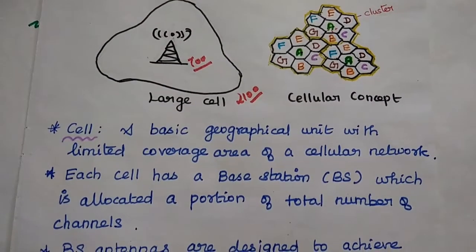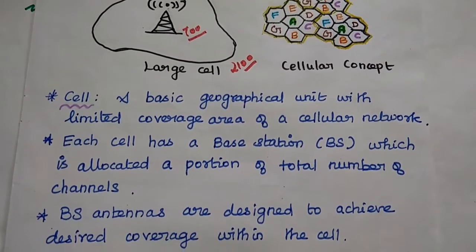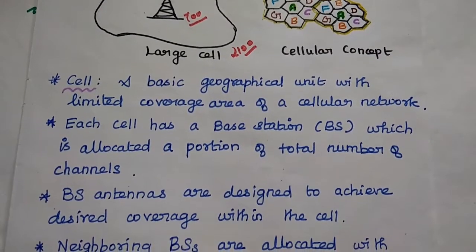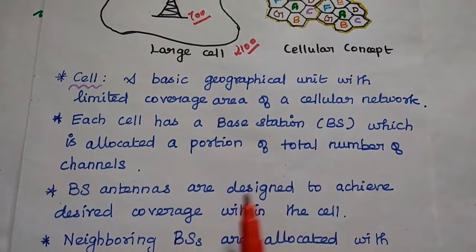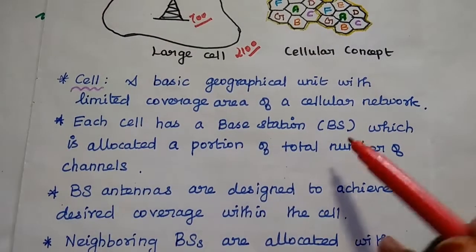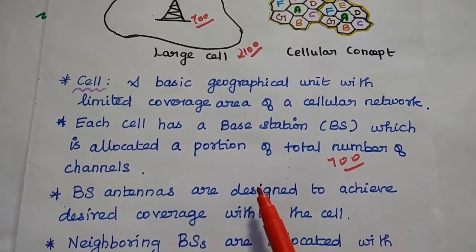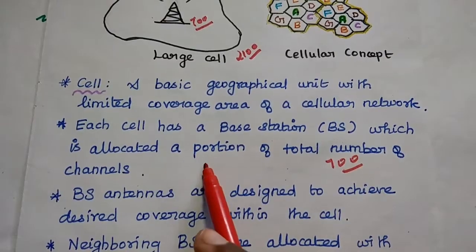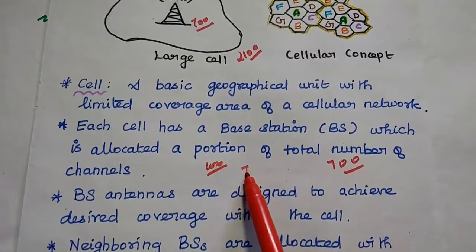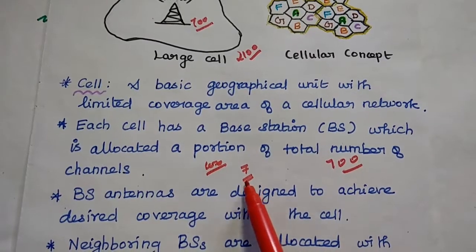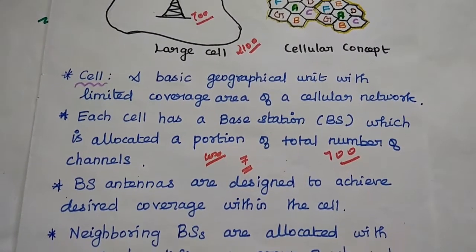Cell is a basic geographical unit with limited coverage area. Each cell has a base station which is allocated a portion of total number of channels. As I told you, total number of channels is 700. We are going to allocate each base station with 100. Then we can have 7 cells in a cluster.